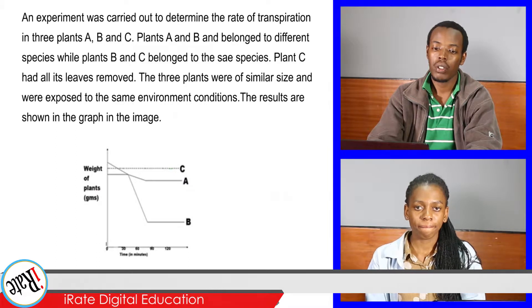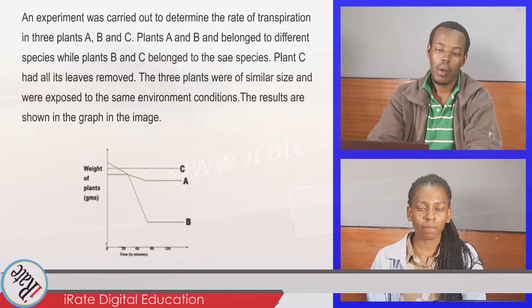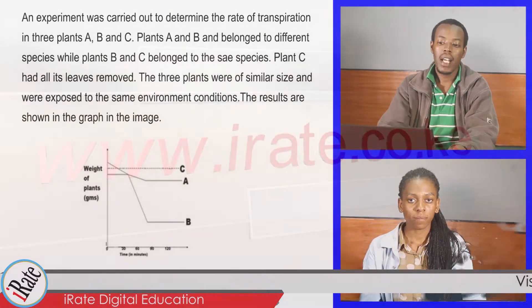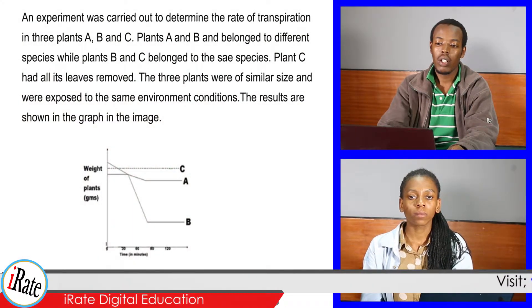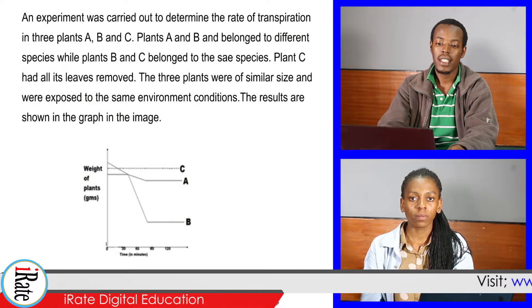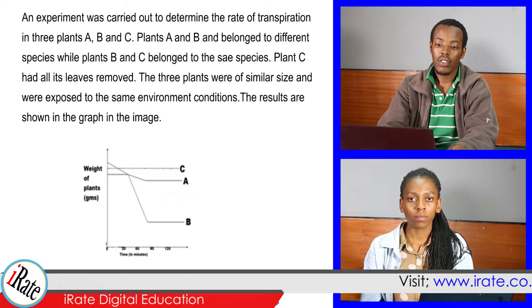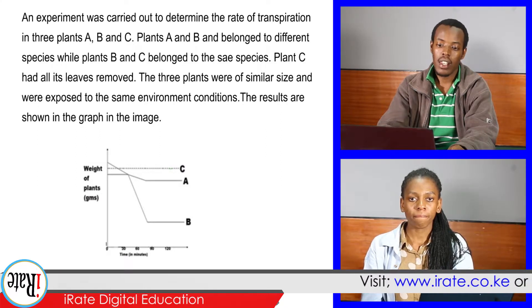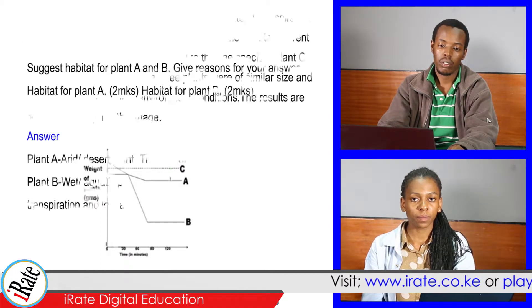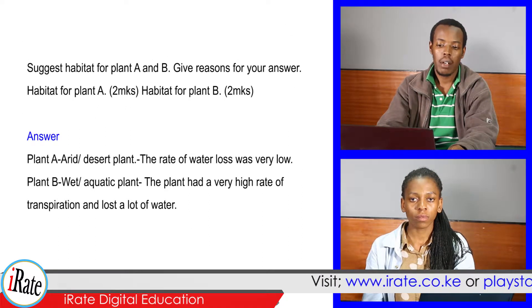An experiment was carried out to determine the rate of transpiration in three plants, A, B, and C. Plants A and B belong to different species while plant B and C belong to the same species. Plant C had all its leaves removed. The three plants were of similar size and were exposed to the same environmental conditions. The results are shown in the graph in the image. Suggest a habitat for plants A and B, and give reasons for your answer.